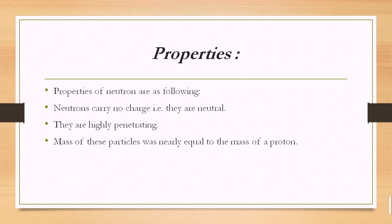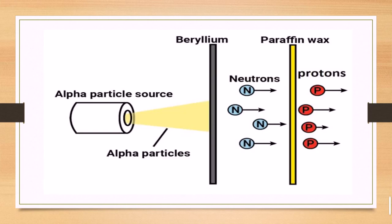Here are the properties of neutrons: neutrons carry no charge because they are neutral, and they are highly penetrating. The mass of neutrons is nearly equal to the mass of a proton. Graphically, when alpha particles strike a beryllium target, they produce neutrons, and those neutrons passing through paraffin wax produce protons. Neutrons are equal in mass to protons.